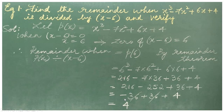Now, 216 minus 252 will be equal to minus 36, plus 36, and plus 4. So, minus 36 and plus 36 gets cancelled, only 4 remains. That is, 4 is the remainder when p of x is divided by x minus 6. Now, let's check by division whether the remainder is 4.